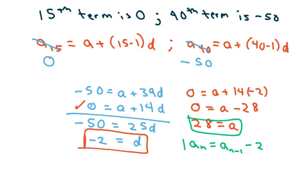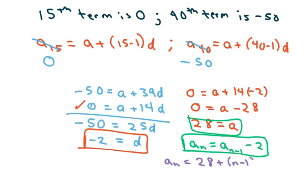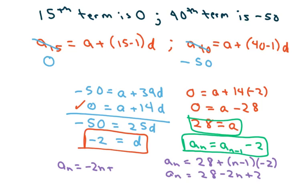Now for my recursive formula: my current term is my previous term plus my d, so that would be minus 2. And my nth term is a sub n equals a sub 1, which is 28, plus n minus 1 times negative 2. That's going to be a sub n equals 28 minus 2n plus 2, so a sub n equals negative 2n plus 30.